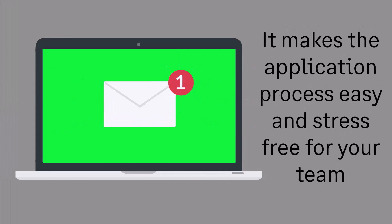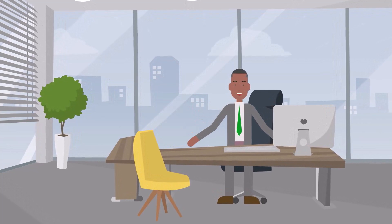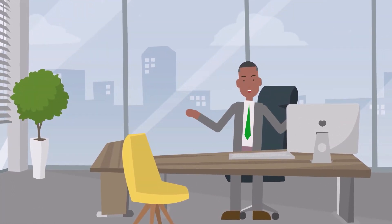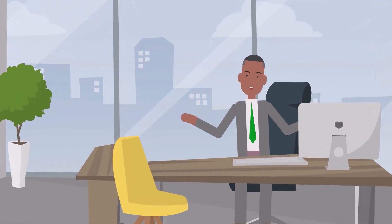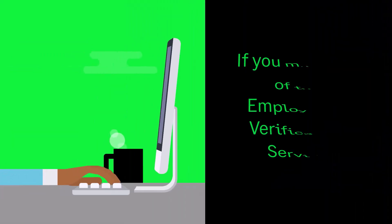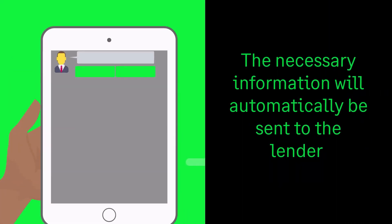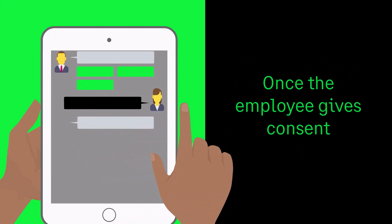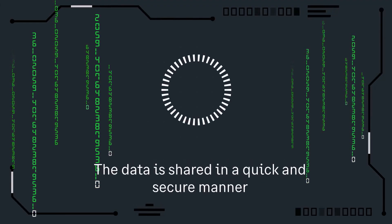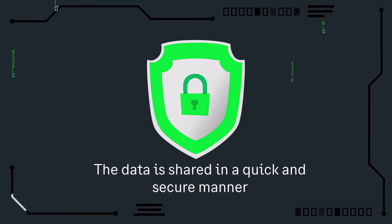It makes the application process easy and stress free for your team as it significantly reduces the time you spend dealing with information requests. When an employee applies for a loan, they are asked to provide employment information as part of the application. If you make use of the Employment Verification Service, the necessary information will automatically be sent to the lender once the employee gives consent. The data is shared in a quick and secure manner, eliminating any additional requests from the employee or financial institution.